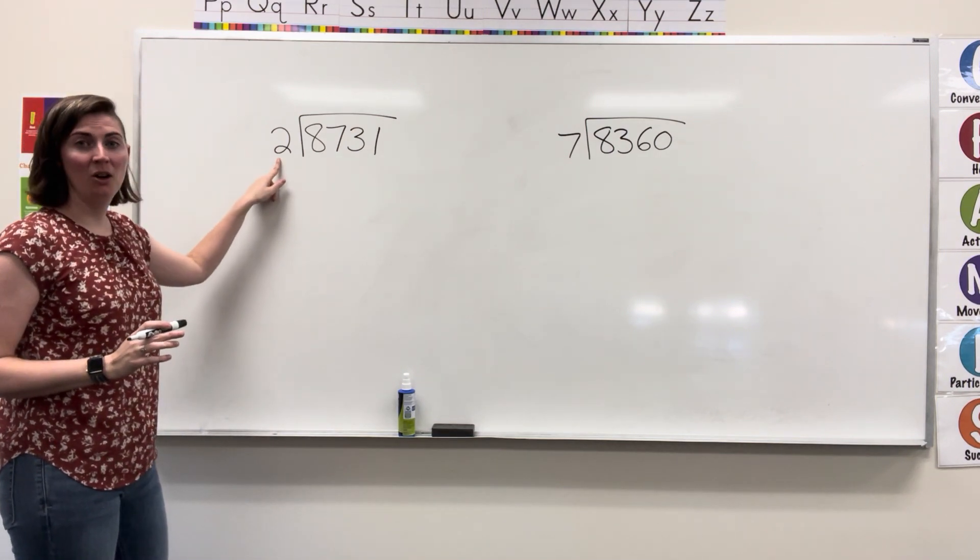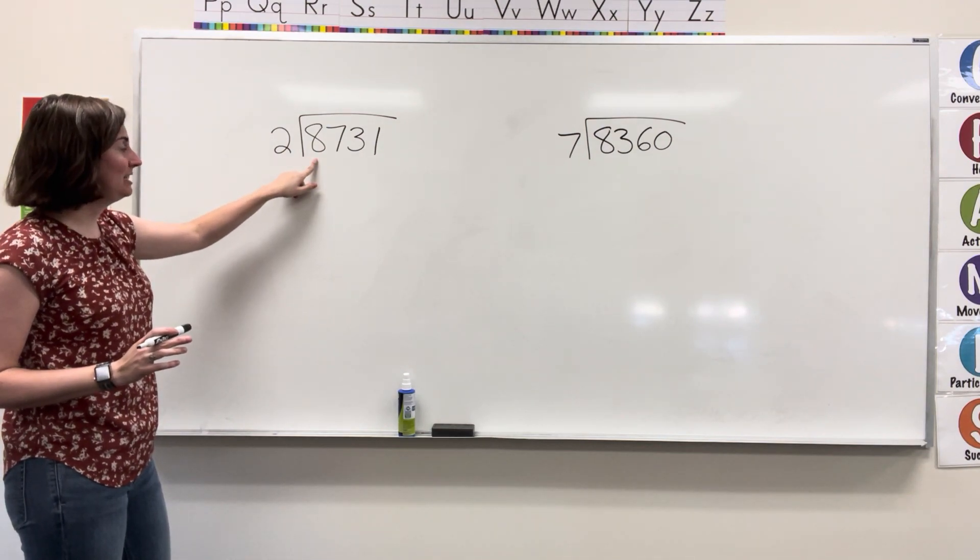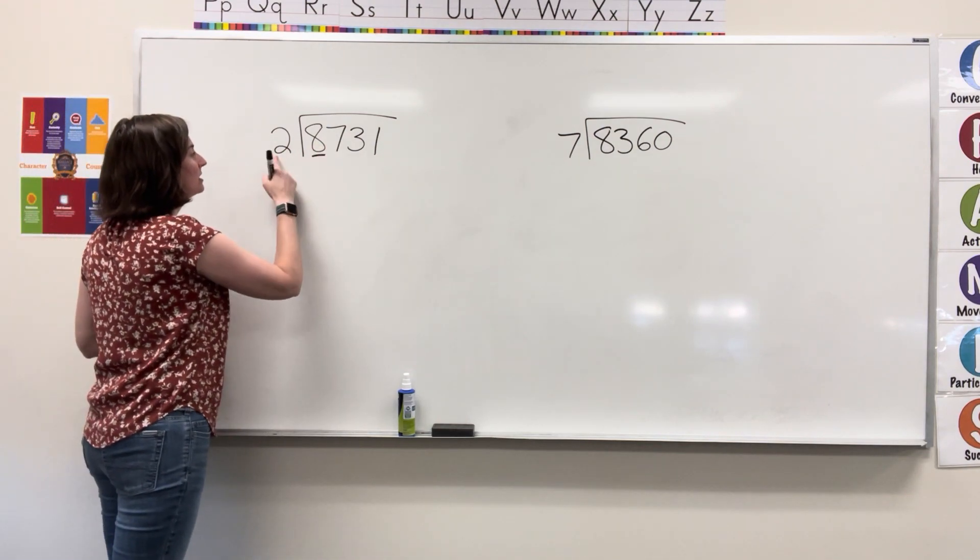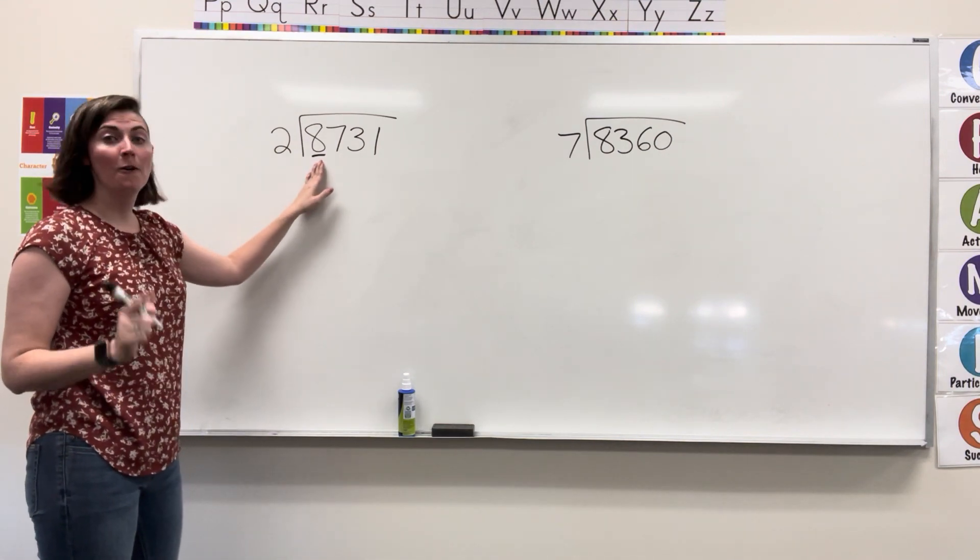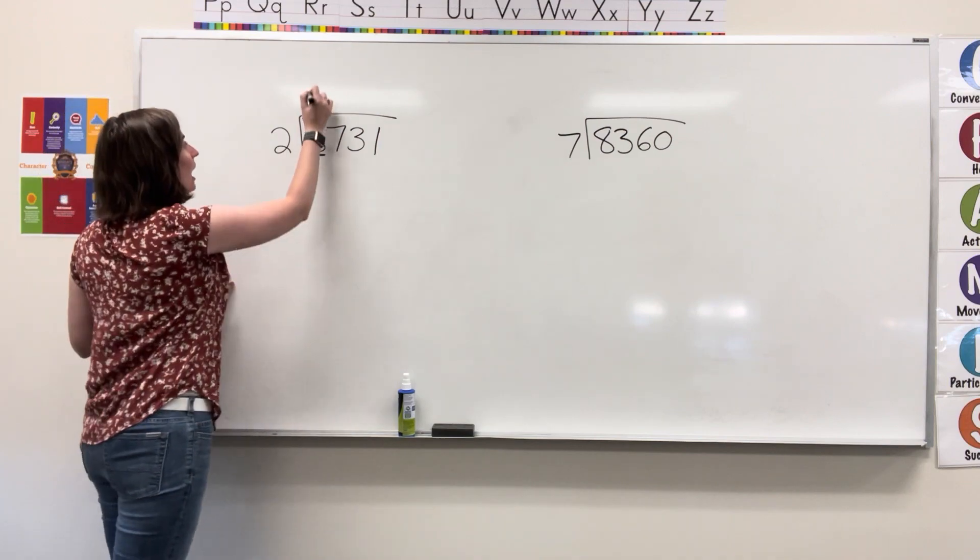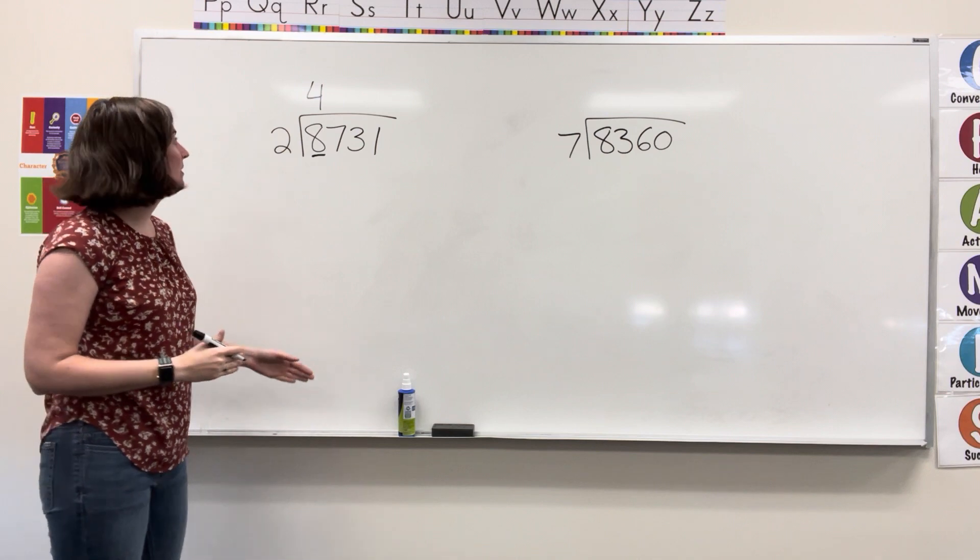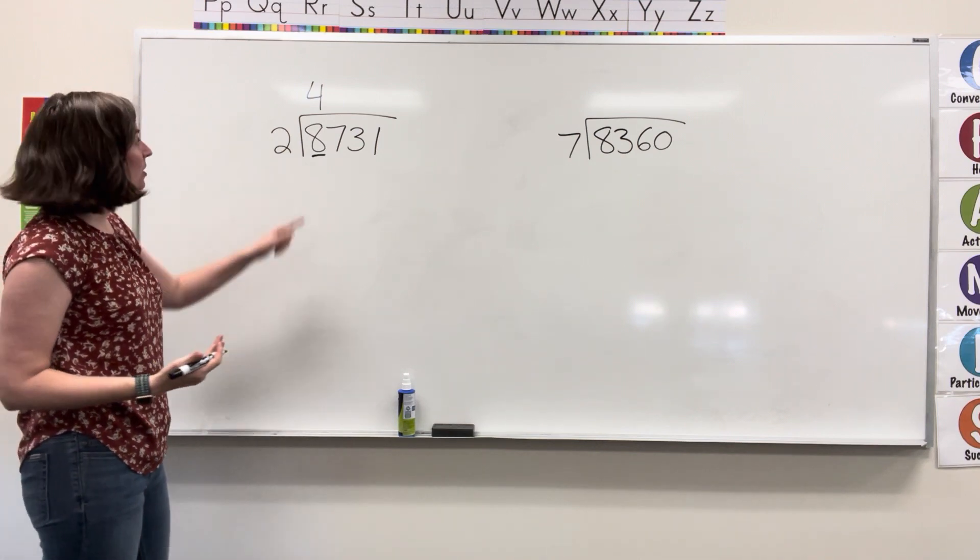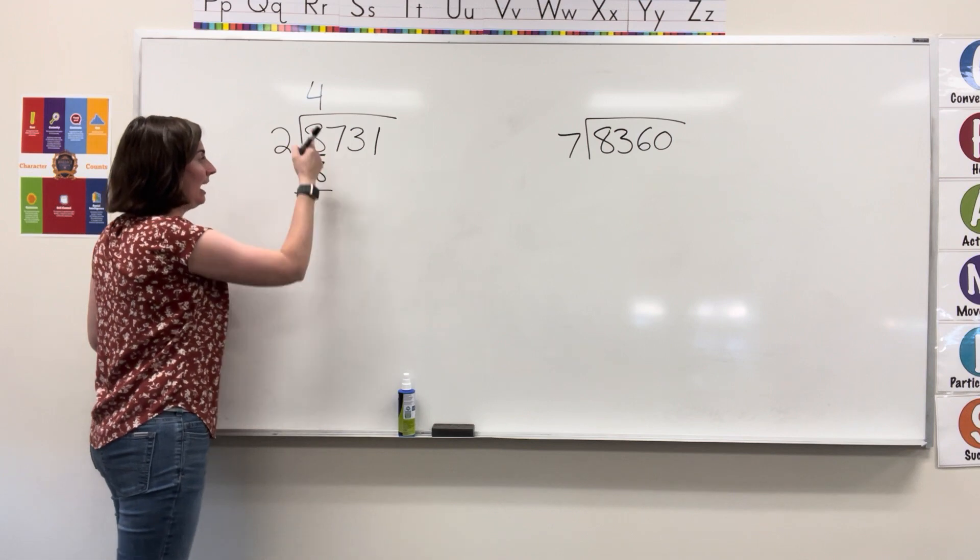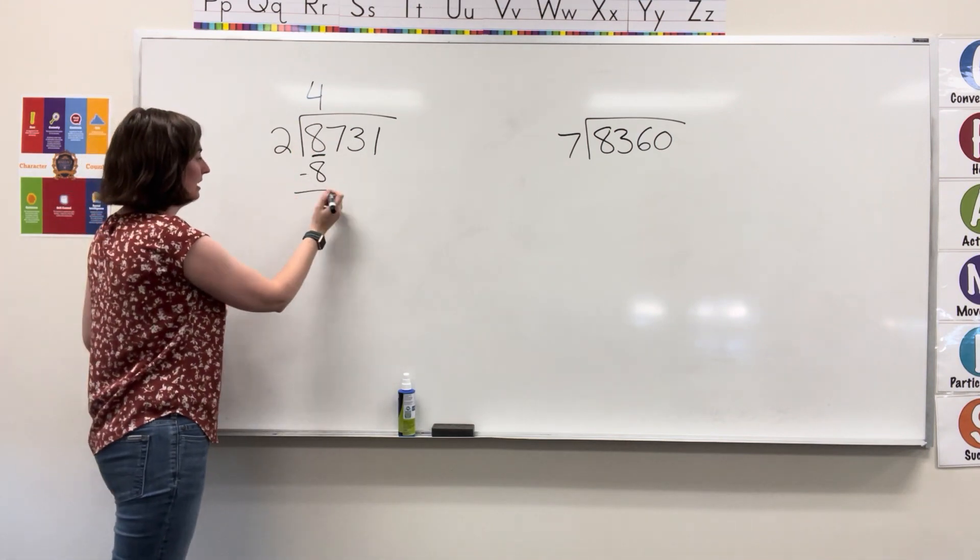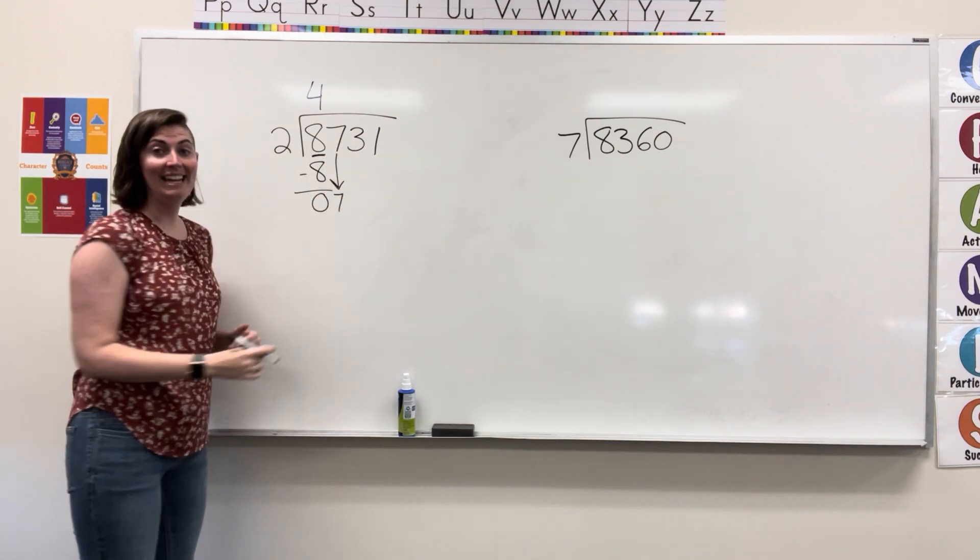First I'm going to start to see if I can fit my divisor into the first digit of my dividend. Does two fit into eight? Yes. Two fits into eight four times. I'm going to write that four directly above the number that it goes into. Now I'm going to multiply. Four times two equals eight. I then subtract. Eight minus eight gives me zero and I bring down the next digit.